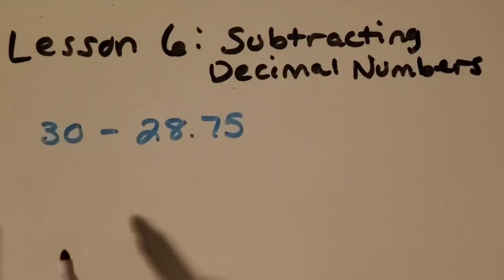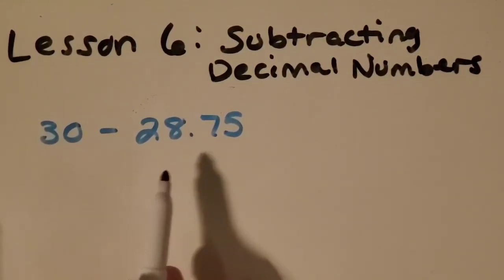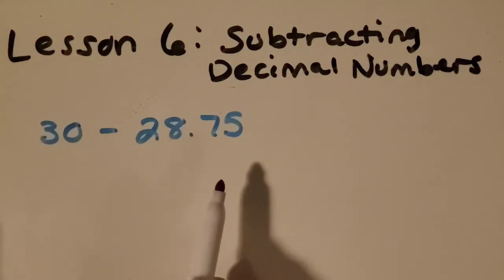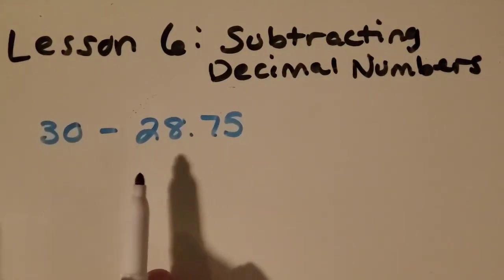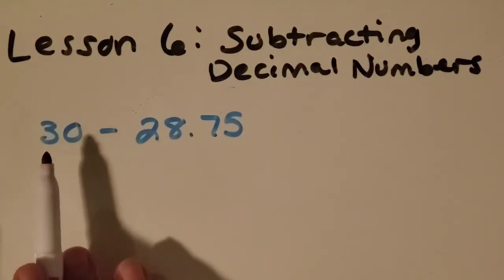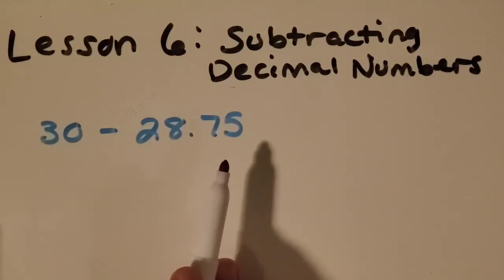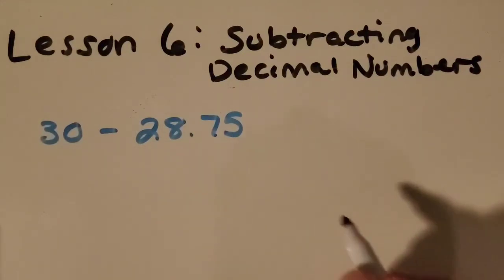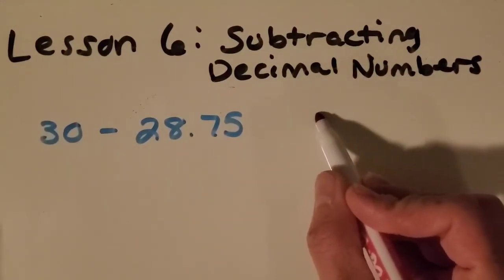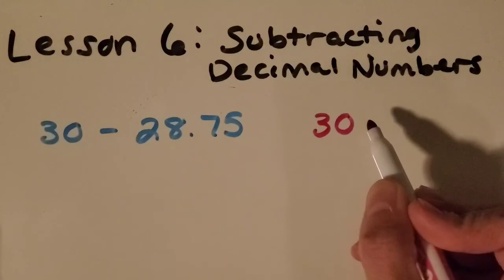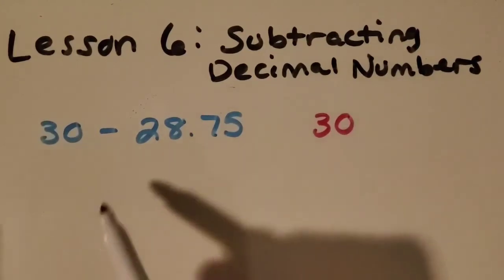We need to do 30 minus 28.75. To me, one of the trickiest things about subtraction is when we have a whole number and we're trying to subtract a number with some decimal places. So let's dig in and give it a try.